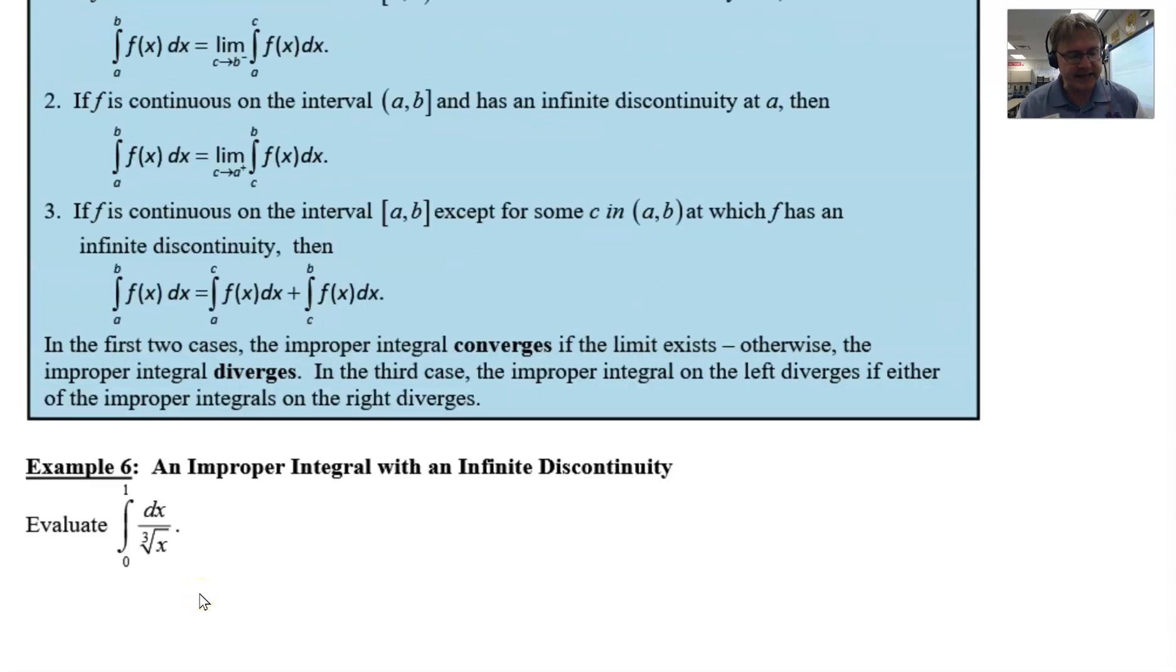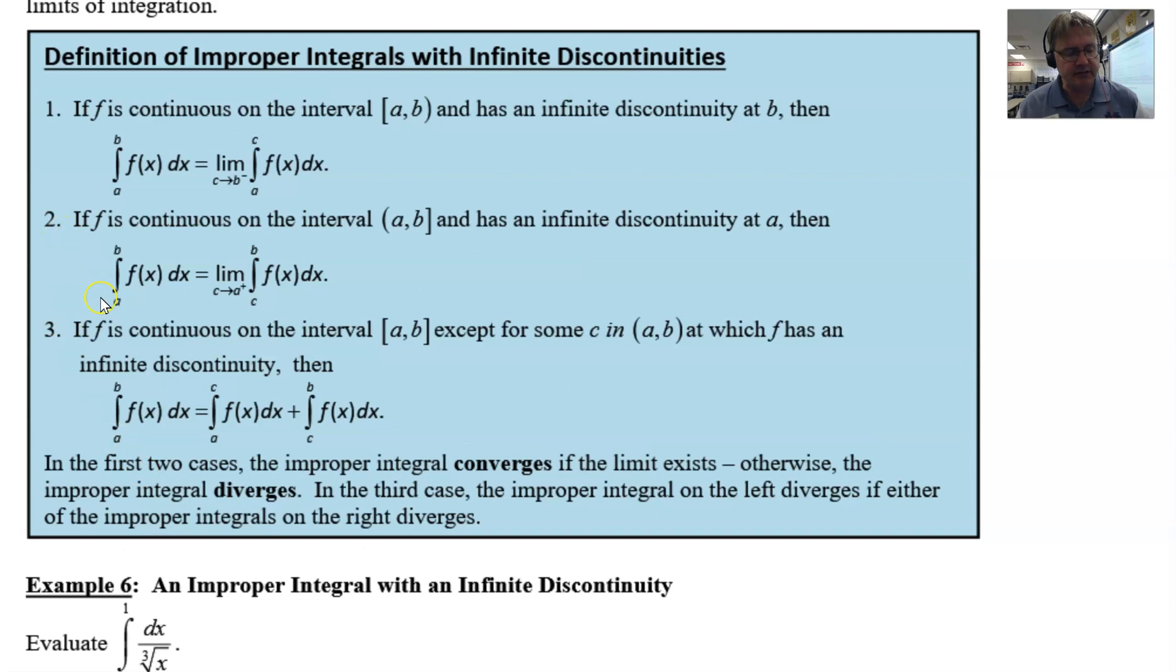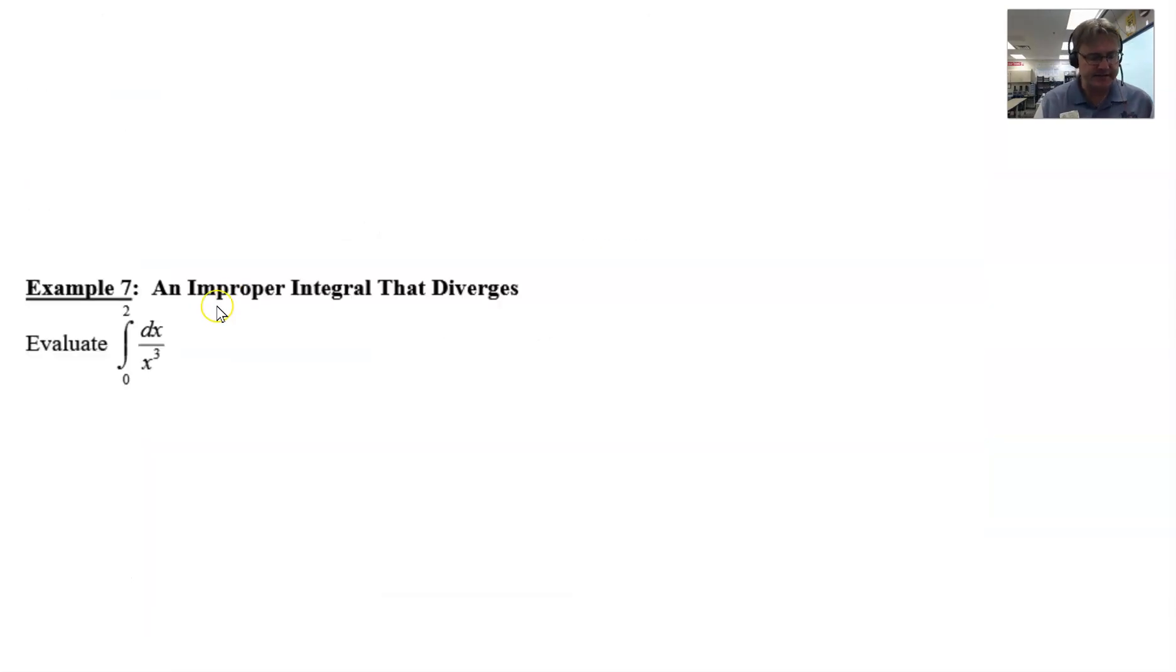Problem 7 is also going to be set up using criteria 2, where we take the limit of some variable that approaches that 0 from the right. I will probably use a for my letter c, and then I'll put the 0 in here for a, like I did before. Let's go ahead and take a look at this solution.